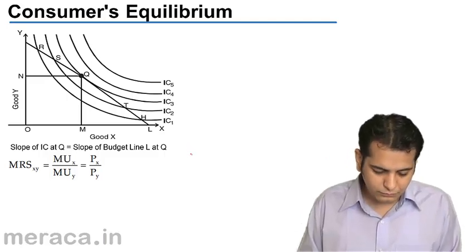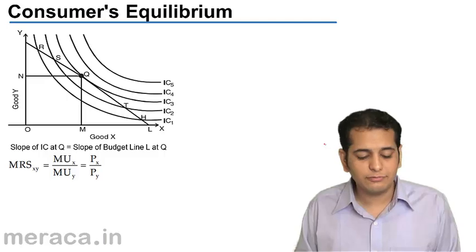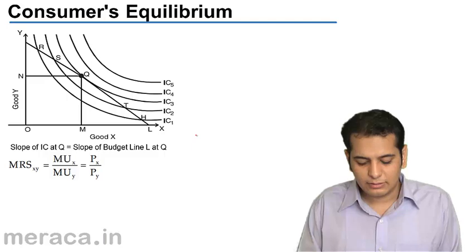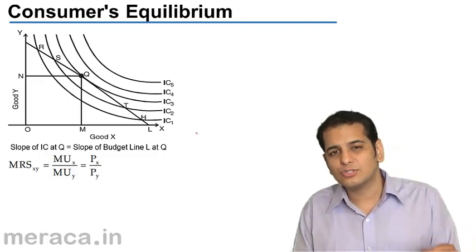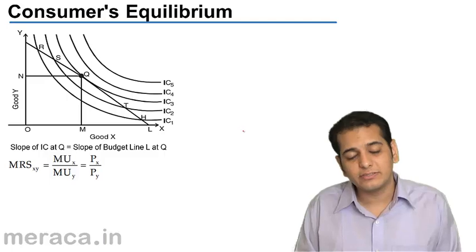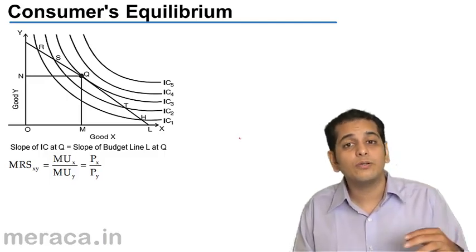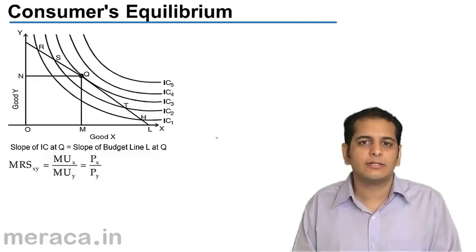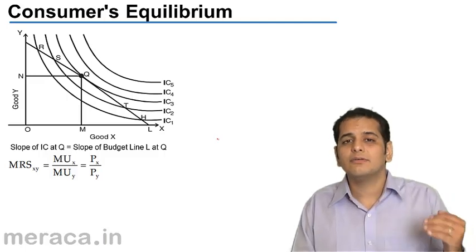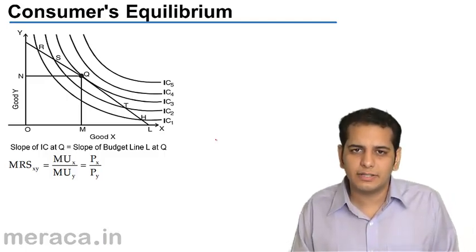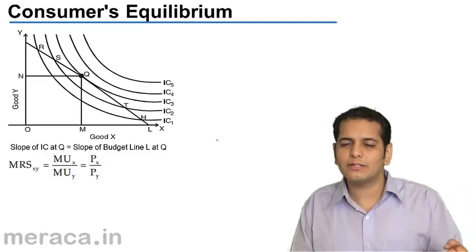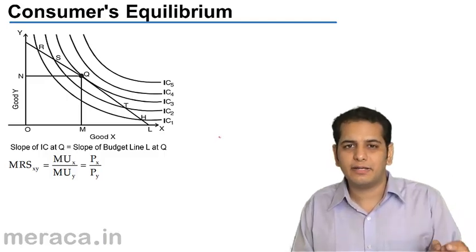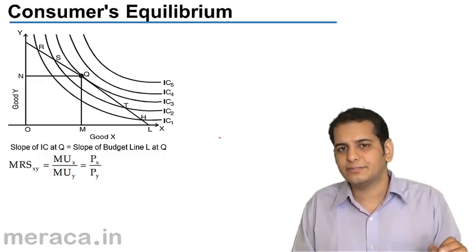Now, in this graph, we can see that there are five indifference curves where IC1 is the lowest and IC5 is the highest indifference curve. It goes without saying that IC2 will give a higher level of satisfaction than IC1, IC3 will give a higher level of satisfaction than IC2, IC4 will give a higher amount of satisfaction than IC3, and finally IC5 will give you a higher satisfaction than IC4.